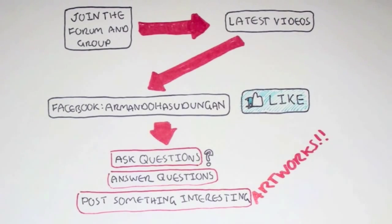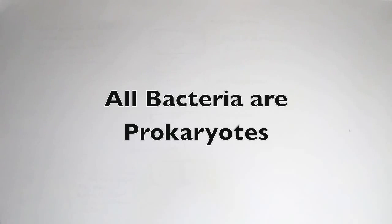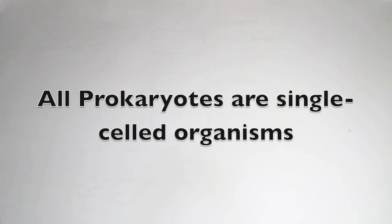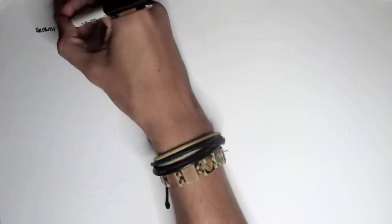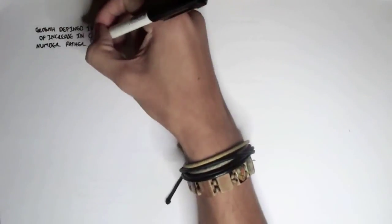In this video, we're going to continue on from the bacteria, the structure, and look at the growth, reproduction, and classification, partly. Now an important thing to know before looking at the growth of a bacteria is that we have to understand that a bacteria is a prokaryote. All bacteria are prokaryote, meaning that they are single-celled organisms. Humans such as ourselves have multiple cells making up us, one organism. Bacteria has only one cell making up that organism. So the growth of a bacteria is defined in terms of an increase in cell number rather than cell size.